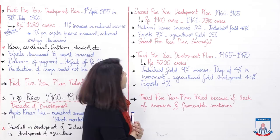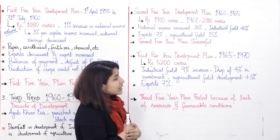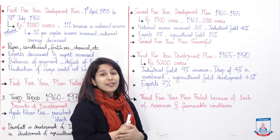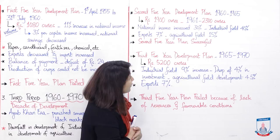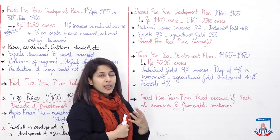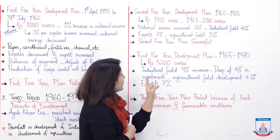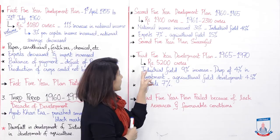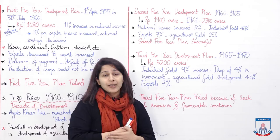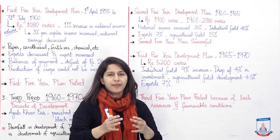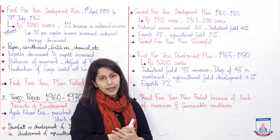Second five-year plan tha 1960 to 1965. Ismein jo volume predict kiya gaya that was rupees 1900 crores, aur sirf 1961 mein hi yeh value 23 crores tak chali gayi. National income increased 30 percent. Industrial field mein 40 percent increase aaya. Exports 7 percent increase — pehle five-year plan mein exports decrease hui thi, yahan pe 7 percent increase aayi. Agricultural field 15 percent develop ki. So the second five-year plan was very successful — usne predictions ko surpass kiya, apne objectives achieve kiye, aur Pakistan ki economy took the shape of a proper developed economy.